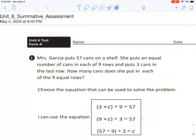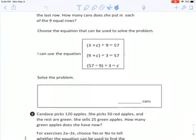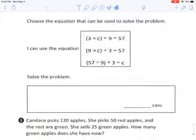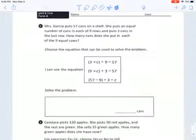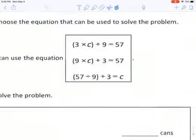Number one, Mrs. Garcia puts 57 cans on a shelf. She puts an equal number of cans in each of nine rows and puts three cans in the last row. How many cans does she put in each of the nine equal rows? Choose the equation that can be used to solve the problem. I recommend actually doing the second part first. I think you should solve the problem first. Try to think, what's my first step? What two numbers should I be using first? Should I use the 57 and the 9 first? Should I use the 57 and 3 first? Or do 9 and 3 first? Solve it first down here, answer it, then circle an equation you could use to help you solve it.